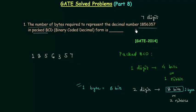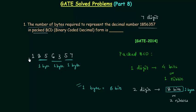The given decimal number has seven digits. To represent digits 5 and 7, we use one byte. To represent digits 6 and 3, we use one byte. To represent digits 8 and 5, we use one byte. We are left with a single digit 1, so we add a leading zero and use one byte to represent 0 and 1. So in total we require four bytes to represent this decimal number.